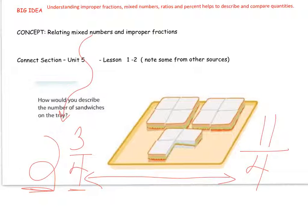So those are the two different ways of communicating this picture. The improper fraction — eleven pieces, eleven out of four. Or the mixed number — two full sandwiches and three-fourths of a sandwich.